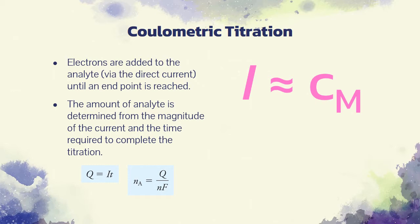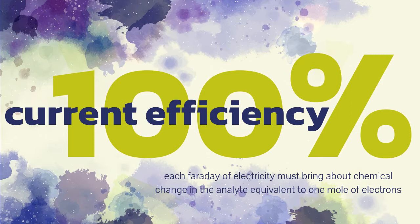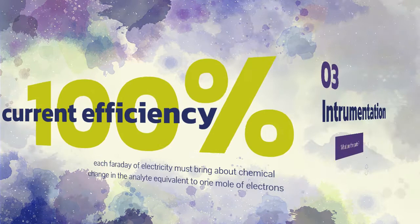The magnitude of the current in amperes is analogous to the molar concentration of a standard solution, and the time measurement is analogous to the volume measurement in conventional titrimetry. A fundamental requirement for all coulometric methods is 100% current efficiency, that is, each Faraday of electricity must bring about chemical change in the analyte equivalent to one mole of electrons. Note that 100% current efficiency can be achieved without direct participation of the analyte in electron transfer at an electrode.